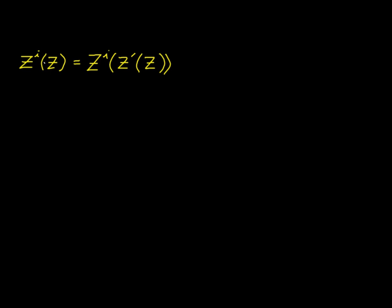Now I'm going to take the partial derivative on the left-hand side of z_i with respect to z_j, creating another free index. So we're going to consider every possible partial derivative of z_i with respect to z_j. With two free indexes like this, there are a total of nine possibilities.